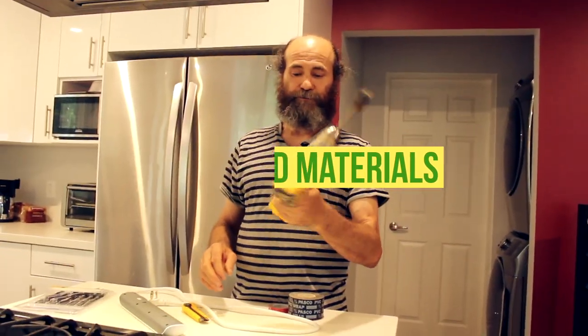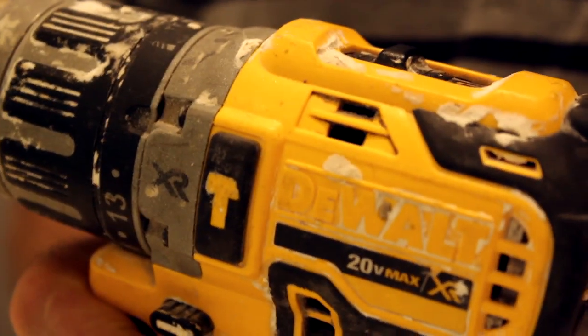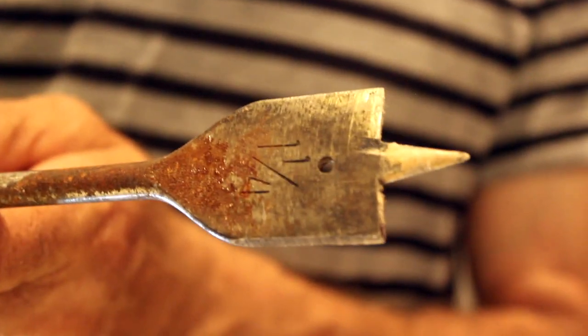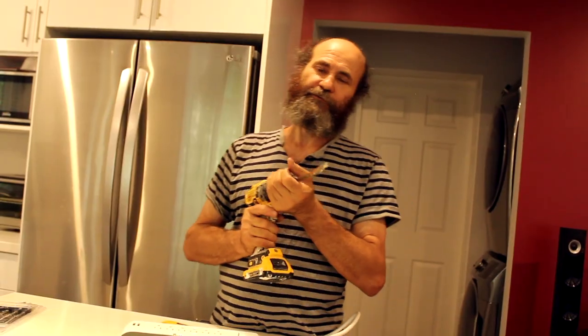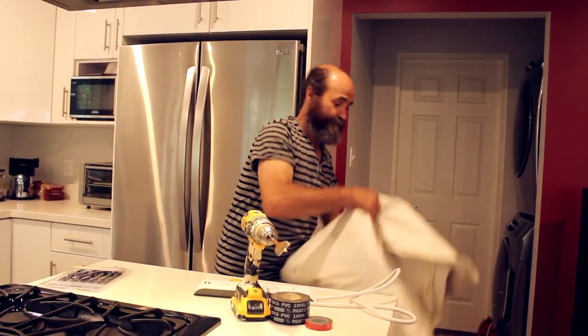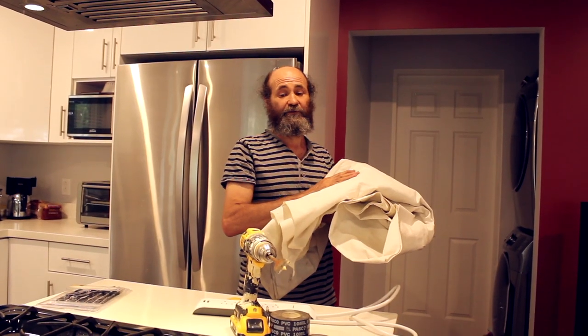We have a Dewalt drill, 20 volt, good piece to have. A bit is a wood bit, an inch and a quarter wood bit. We're going to cut through MDF or wood. And we're going to be using a drop sheet. It's just a regular drop sheet. We just want to protect the floor a little bit and have a place to put the tools on top.